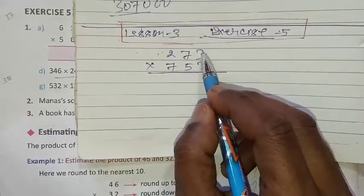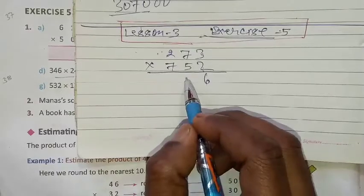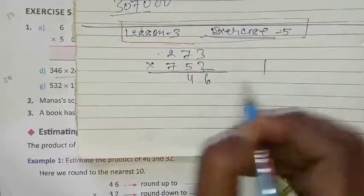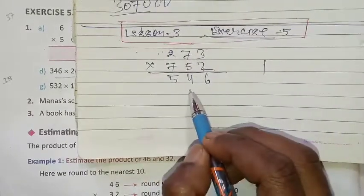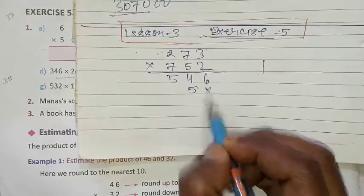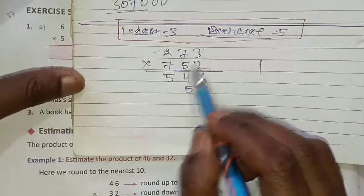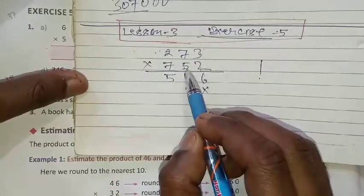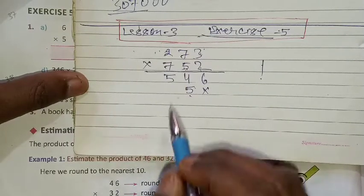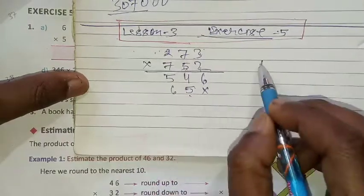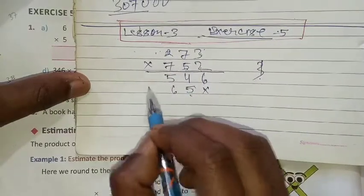2 into 2 multiply, 3 into 3 is 6, 2 into 7 is 14. 2 into 2 is 4, 1 and 5, 5. 3 into 5 is 15, 5, 1. 5 into 3 is 15, 5, 1, 5. 3 into 5, 35, 1. 3 into 6, 3, 5, 2, 10, 3, 13.